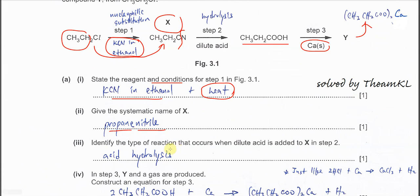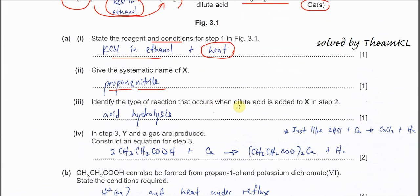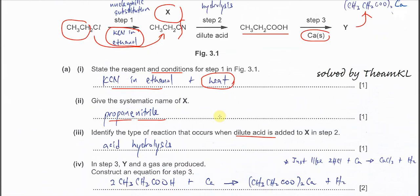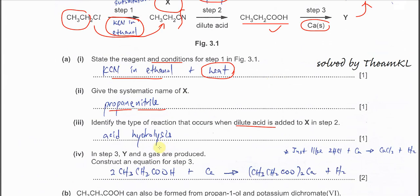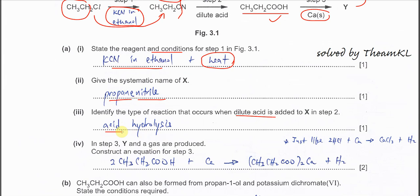Part (iii): Identify the type of reaction that occurs when dilute acid added to X in step 2. Dilute acid, so it is the acid hydrolysis. So it must form carboxylic acid here. Therefore, what you need to mention is acid hydrolysis, not alkaline. It must involve acid in the hydrolysis.